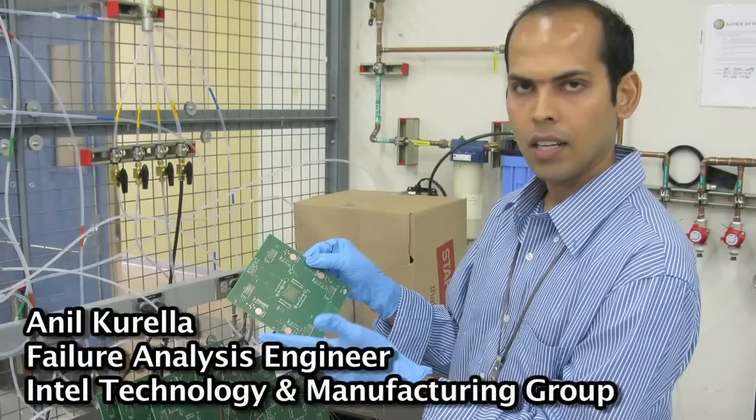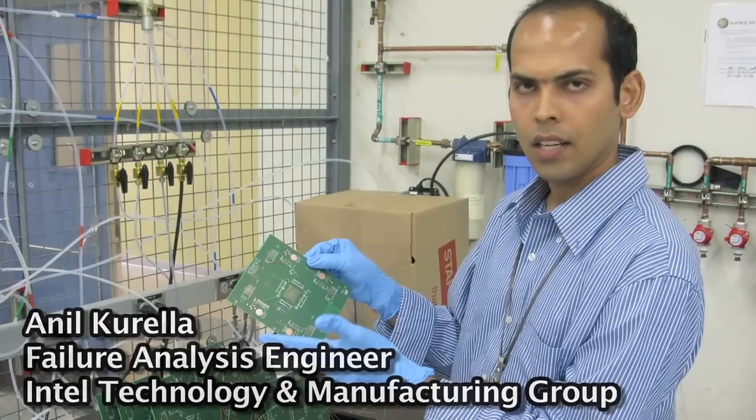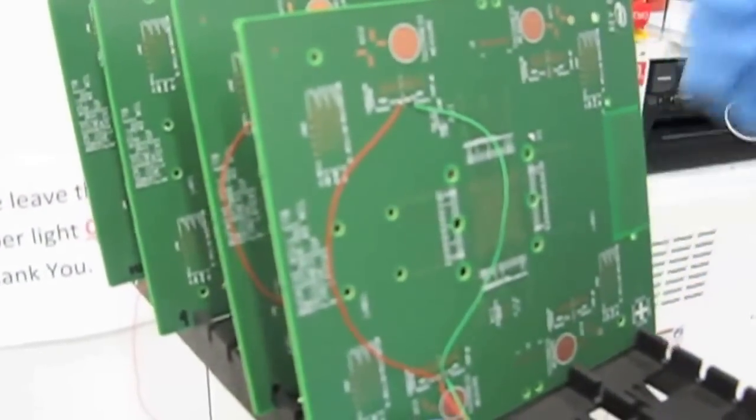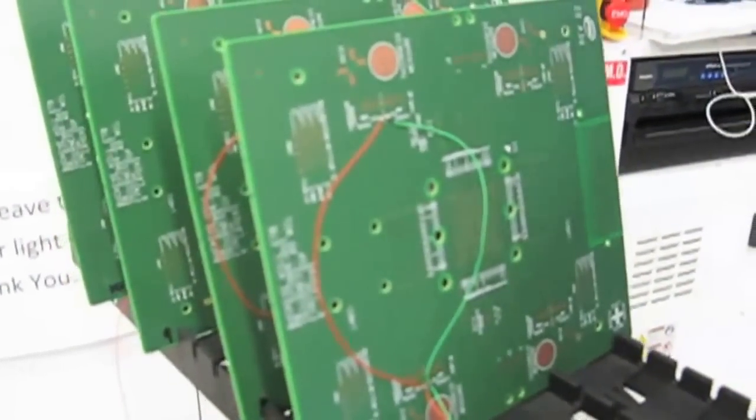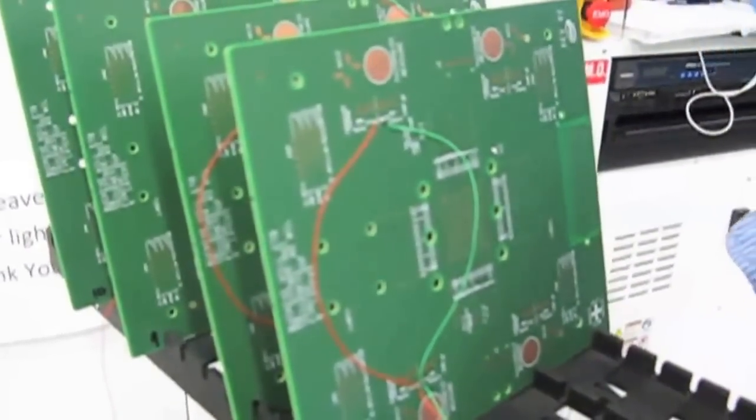What we have here are a bunch of test vehicles on which we have put design features that actually go into a mobile phone. On those features, we have deliberately sprayed flux contamination, and we are starting to study the effects of corrosion under the effect of bias.